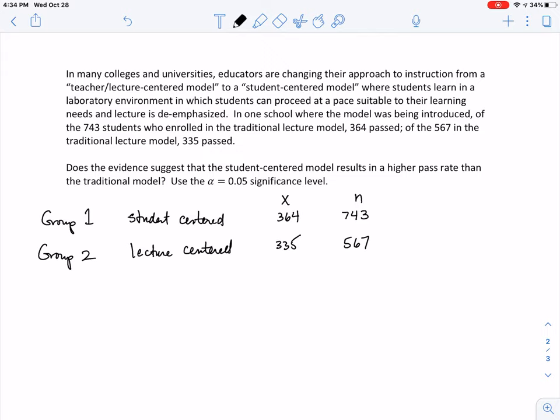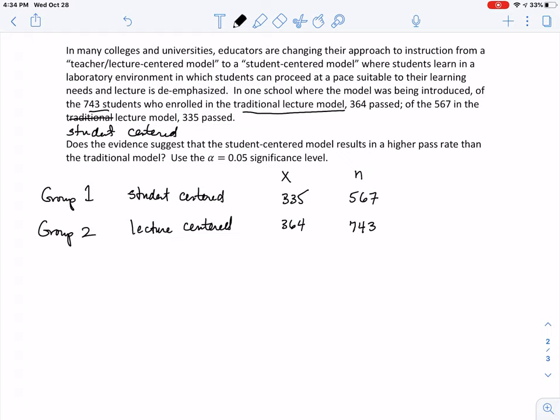Oops, I got this backwards. I should be paying attention. So student centered, this is you've got to make sure you're paying attention. Traditional lecture, there were 743, 364 passed. See, even I make mistakes. And then, this should be student centered. This is a typo on my part. So this is 335, out of 567. That's why I was getting myself all screwed up.